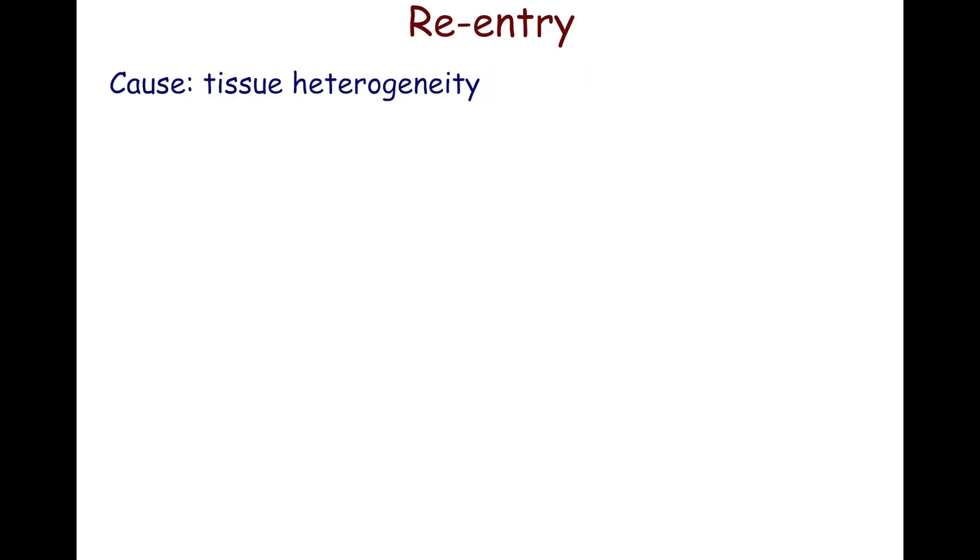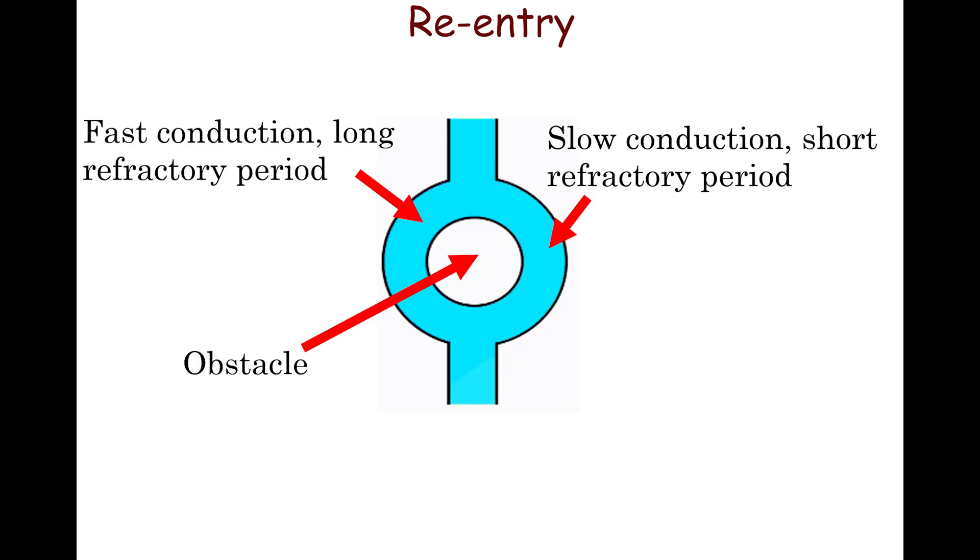The main cause of the reentry mechanism is tissue heterogeneity. A reentry loop requires two adjacent pathways with different conduction speeds and refractory periods that are separated by an obstacle and connected proximally and distally.